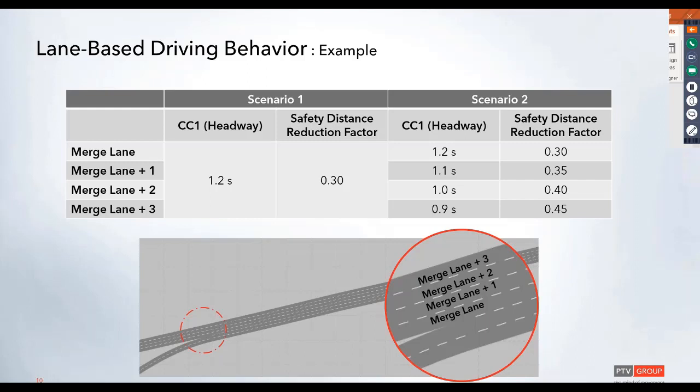Of course, more could be adjusted as needed, but for this scenario, we're just going to look at changing the CC1 value, which is the headway, and also the safety distance reduction factor for vehicle lane changes.